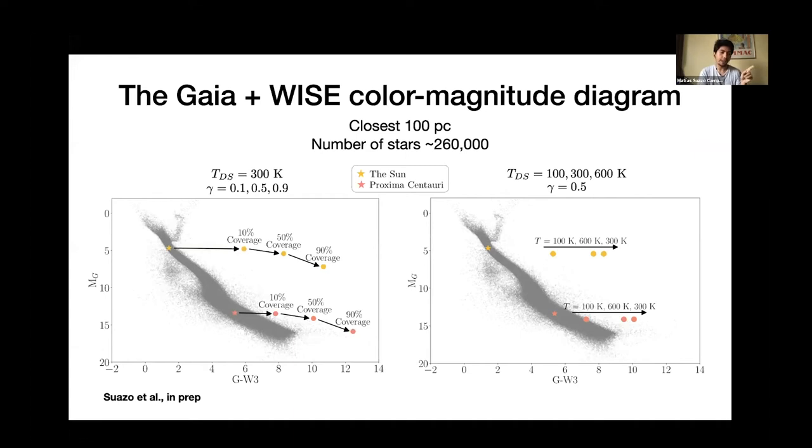And we are checking their color magnitude diagrams. Here we have color magnitude diagrams with G absolute magnitude on the y-axis and G minus W3 on the x-axis. And the gray dots are the stars in the sample, while the yellow and the red stars are the sun and Proxima Centauri respectively. And we can see how different Dyson sphere model change their position in the color magnitude diagram. We can see here models for a fixed temperature, which is 300 of different covering factors. And here we can see how they change for a fixed covering factor of 0.5 and different temperatures. The point here is, you will have a color excess.